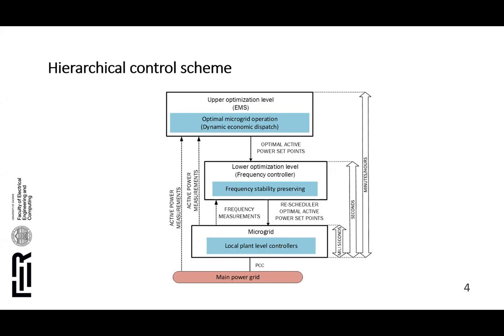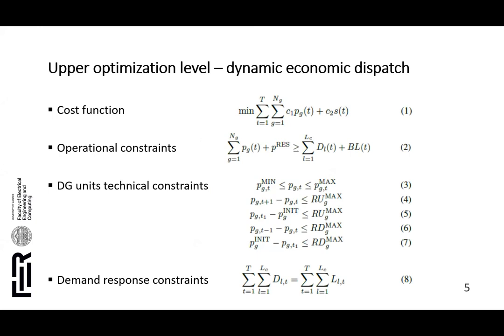The upper optimization level is represented in the form of a dynamic economic dispatch problem. The main goal of this control level is to minimize the total operating costs and to satisfy the demand and other technical constraints over a prediction horizon. Equation number one is the cost function used in the dynamic economic dispatch problem. The first term in the cost function represents the cost associated with energy production from DGs, and the second term represents cost or profit from the interaction with the utility grid. Capital T represents the length of the prediction horizon.